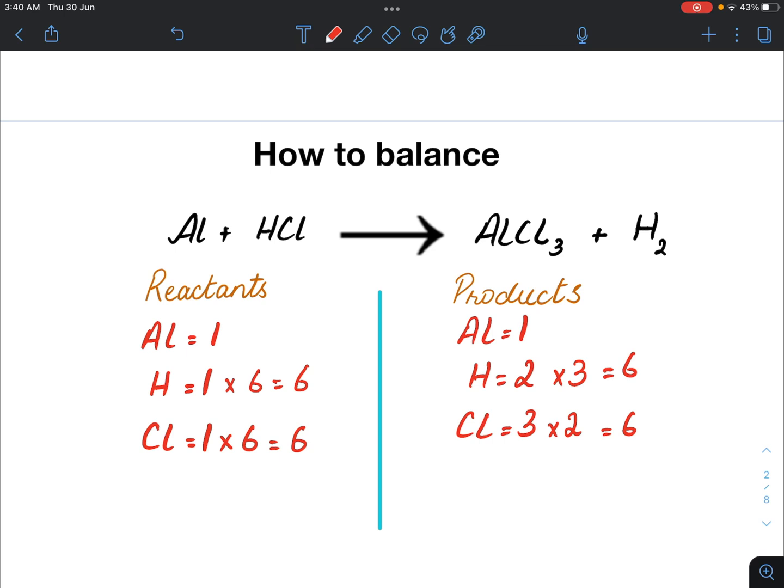Now let's put our coefficients. Now this means that we have two aluminum atoms and six chlorine atoms. So I multiply it here with two. I get two.